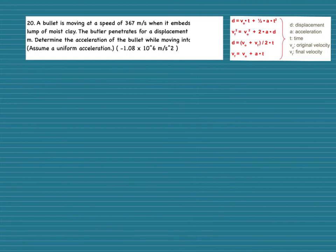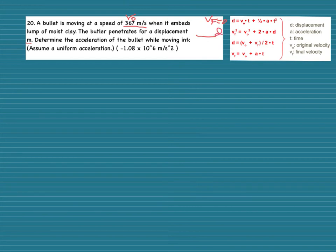Number 20: a bullet moving at 367 meters per second embeds into a lump of moist clay, penetrating a displacement of 0.0621 meters — determine the acceleration of the bullet. Initial velocity is 367 m/s, and since it embeds and stops, final velocity is zero. Displacement is 0.0621 meters, and acceleration is what I'm solving for.